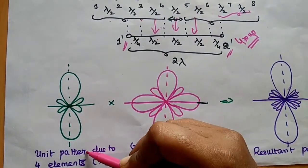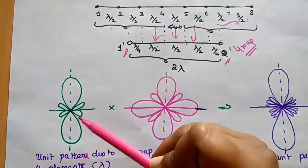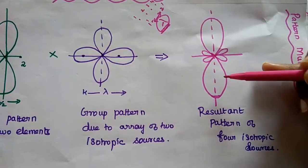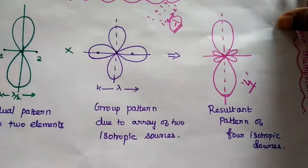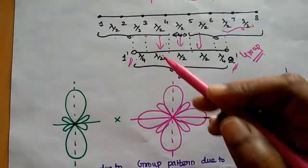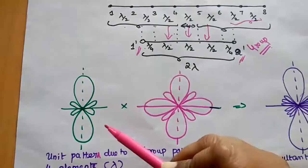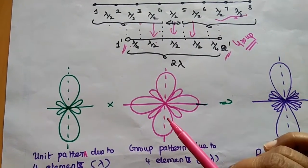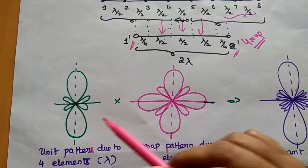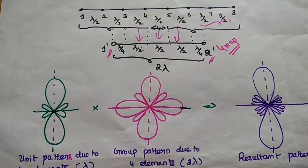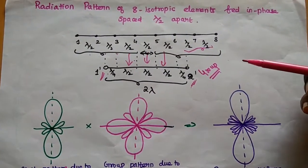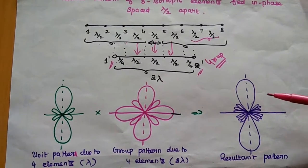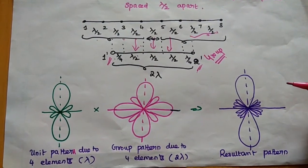The unit pattern is obtained from the grouping of four elements — this is the individual element pattern, which is the resultant pattern of four isotropic elements we just derived. The group pattern for the two elements spaced 2λ gives a multi-lobe pattern. Multiplying these two patterns gives the resultant radiation pattern of eight isotropic elements. Likewise, we can draw the radiation pattern of any number of isotropic elements using this simple technique to find radiation patterns of complicated arrays.